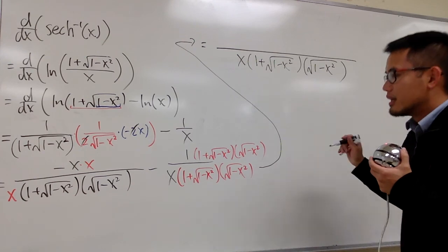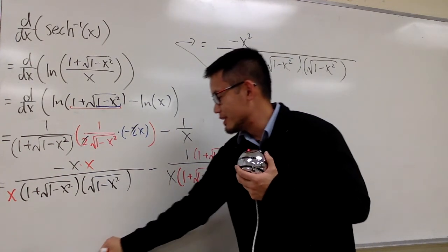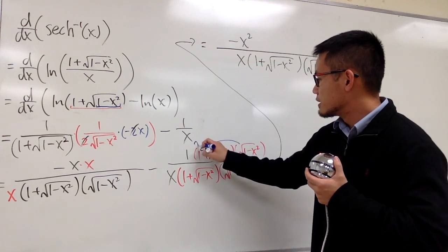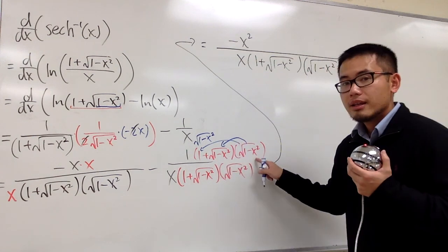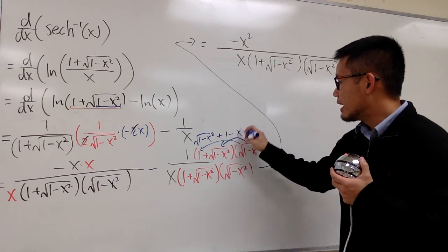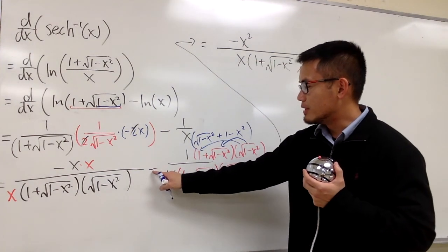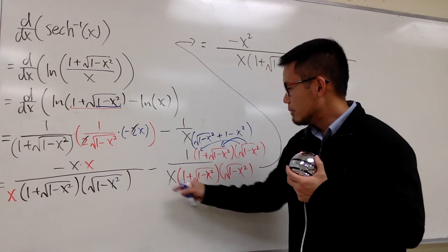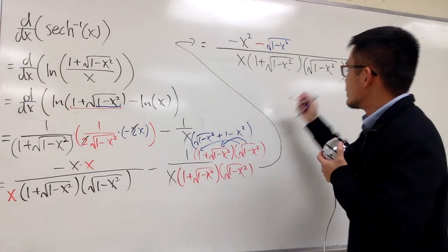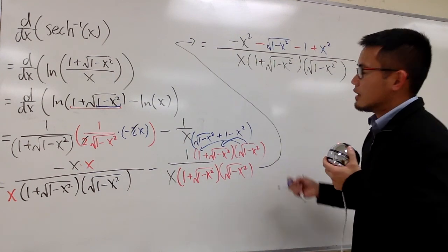For the first term in the numerator we will have negative x squared. For the second term, 1 times this is just that. Then I distribute: square root of 1 minus x squared times square root of 1 minus x squared — since the two square roots are the same, we just get the inside, which is 1 minus x squared. This blue term is being subtracted, so I put it in parentheses and distribute the negative, giving negative square root of 1 minus x squared, then negative 1, and negative negative becomes plus x squared.